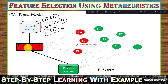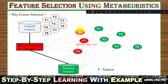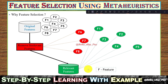We remove the irrelevant features to save time and to improve accuracy for any particular problem. Here, we have eight features in the dataset. Suppose F6, F7, and F8 are irrelevant — we remove them. Now we have only the relevant features: F1, F2, F3, F4, and F5. Using this refined dataset for testing and training will save time and provide more accurate results.